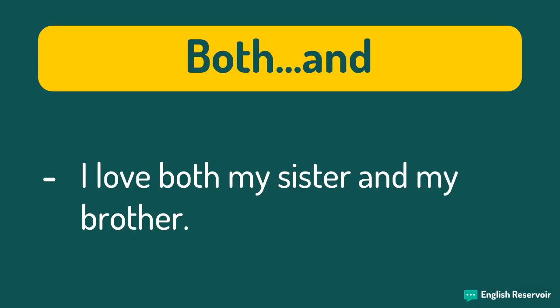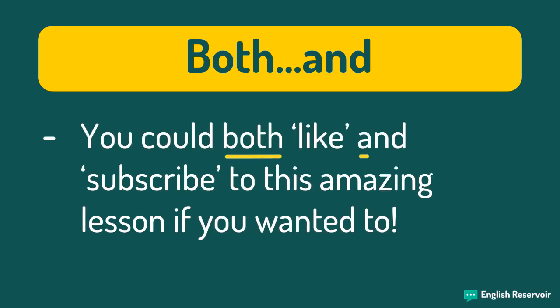Both and. We can use both and to show that two things or people are the same — that is, both options are equal. I love both my sister and my brother. Here you love two people — your sister and your brother — so you love two people equally, hence both and. You could both like and subscribe to this amazing lesson if you wanted to.